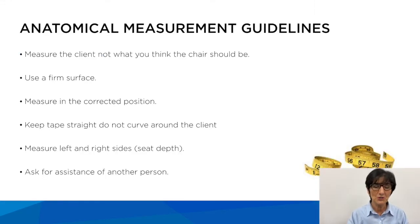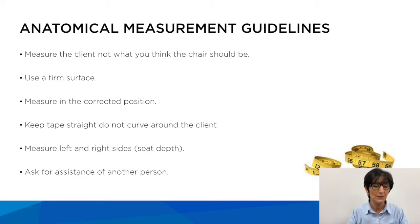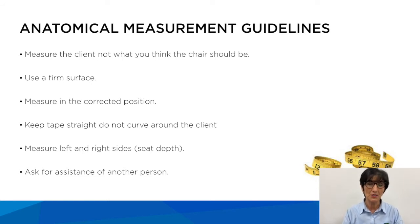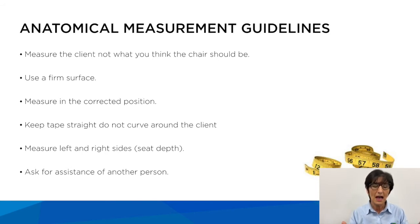Here are some guidelines for taking anatomical measurements. Measure the client, not what you think the chair should be. Always use a firm surface and measure in the corrected position. Keep your tape straight — do not curve it around the client. Always measure left and right sides, and ask for assistance from another person as measuring can be difficult. The nice thing about Seating Matters chairs is that because they're so adjustable, you don't have to get the measurement exactly right — you can adjust the chair to accommodate the person when they're in it.